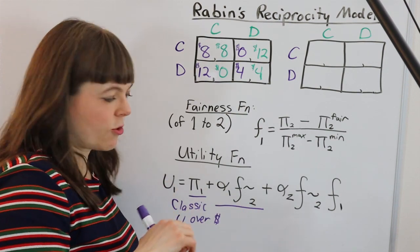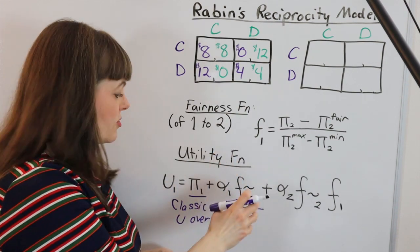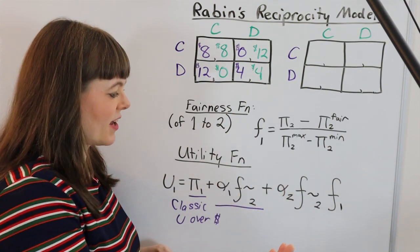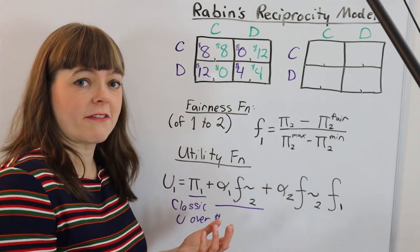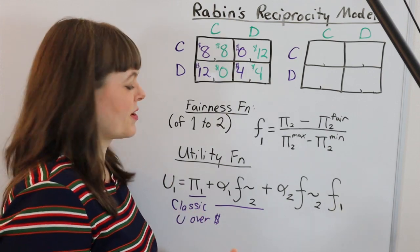The second part of this utility function is player one's utility over how fair they perceive the other player to be to them. Because of course we get direct disutility if someone's mean to us, direct utility if they're nice to us, just based on the fact that we care about how people treat us generally.